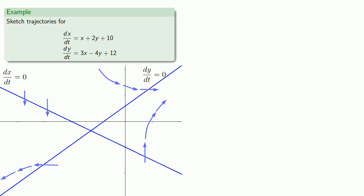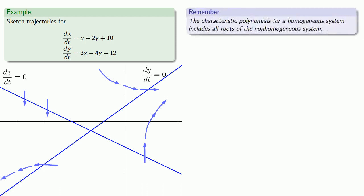So the thing to remember is that the characteristic polynomials for a homogeneous system include all roots of the non-homogeneous system, which means our eigenvalues and eigenvectors will be the same. We can ignore these constants and solve for our homogeneous system. So we find our eigenvalues will be minus 5 and 2.